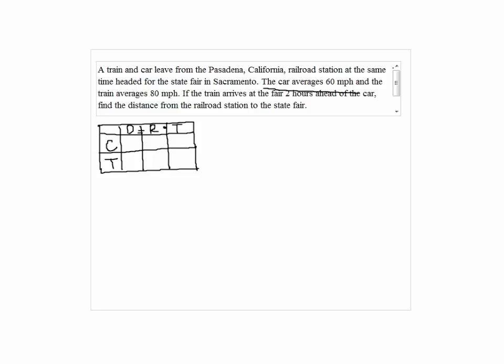Since the car averages 60 miles per hour, we know the rate for the car, so 60 goes in the box. The train averages 80 miles per hour, so we put that in the box as well.